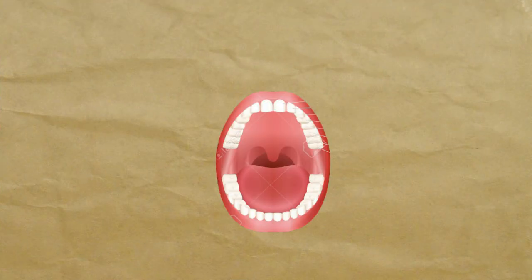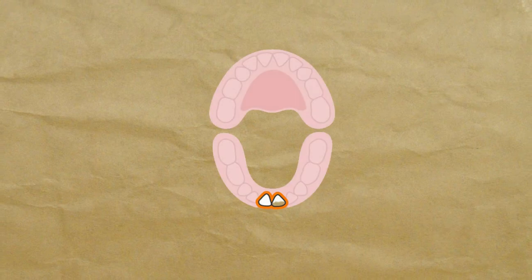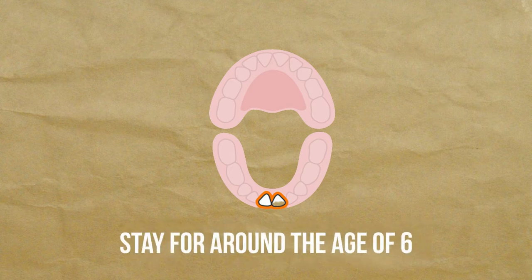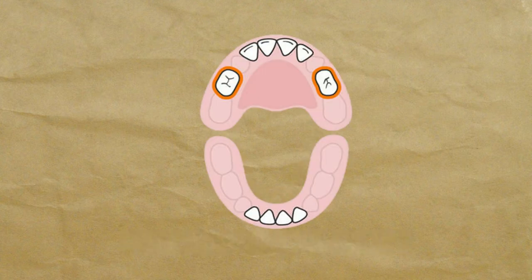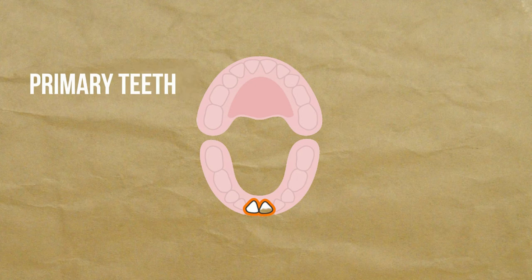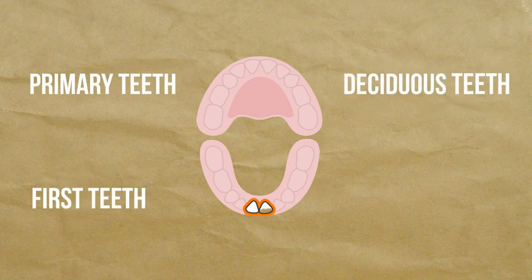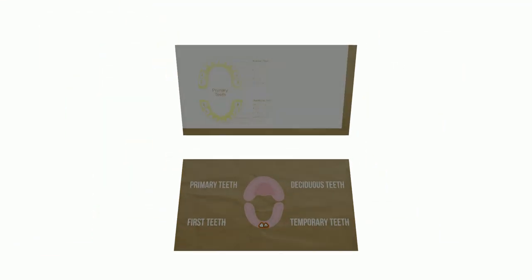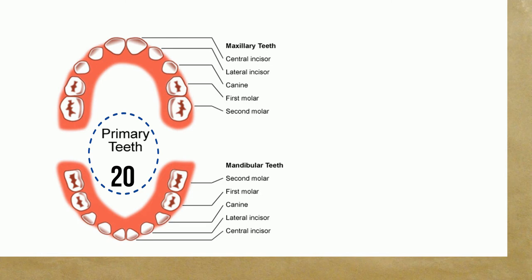Over their lifespan, humans have two different types of teeth: baby teeth, or temporary teeth, and permanent teeth. Milk teeth, also called baby teeth, grow in the beginning and stay until around the age of six. Most kids have their first set of teeth by the time they are three years old. These are also called primary, first, deciduous, or temporary teeth. There are 20 primary teeth in all.